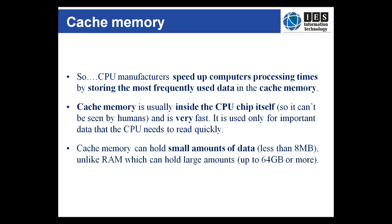In terms of capacity, cache memory only holds small amounts of data — for example 4MB — unlike RAM which can hold large amounts of data, for example 4 to 64GB and beyond.